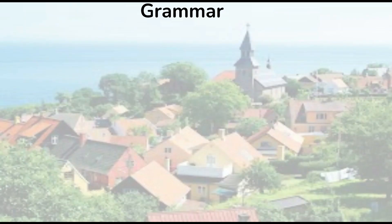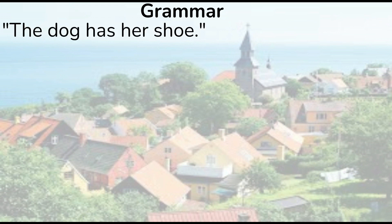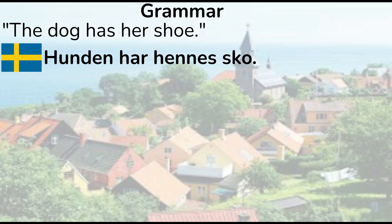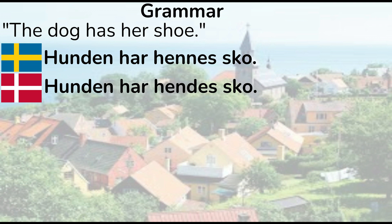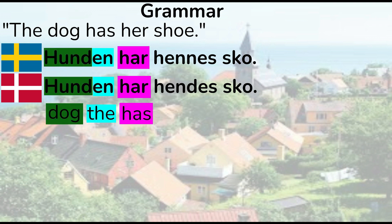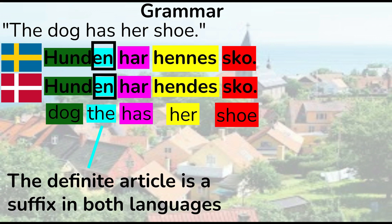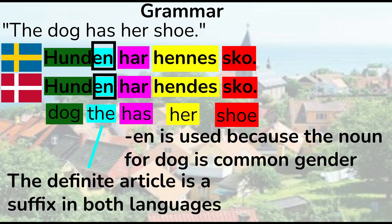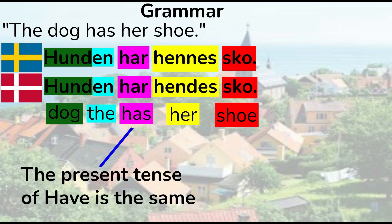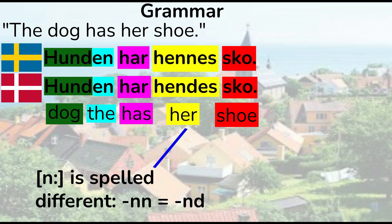Now let's take a look at a few sentences to see what else we can find. This sentence means 'the dog has a shoe'. In Swedish: 'hunden har hennes sko'. In Danish: 'hon har hennes sko'. Word for word: 'dog the has her shoe'. Remember that the definite article is a suffix in both languages. 'N' is used because the noun for dog is common gender. The present tense of 'have' is the same except for pronunciation: Swedish 'har', Danish 'ha'. A long N sound is spelled differently — double N in Swedish often corresponds to ND in Danish, where D isn't pronounced. 'Hennes' in Swedish, 'hines' in Danish.